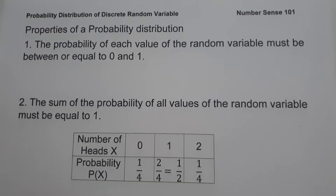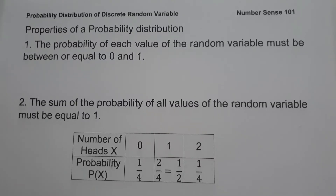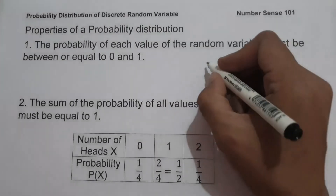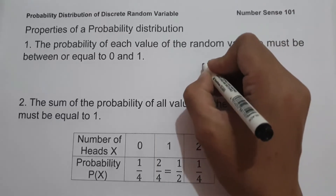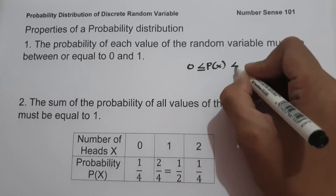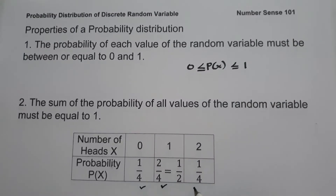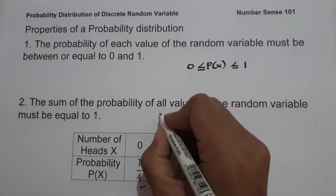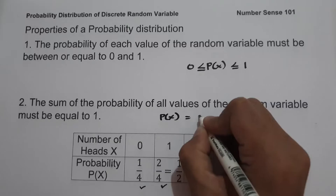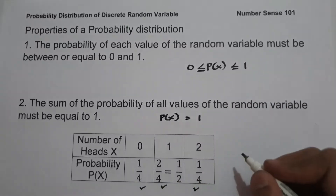Now let us talk about the properties of a probability distribution. Number one, the probability of each value of the random variable must be between or equal to zero and one. In symbols, P(X) must be greater than or equal to zero but less than or equal to one. Number two, the sum of the probabilities of all values of the random variable must be equal to one. In symbols, the sum of P(X) must equal one.